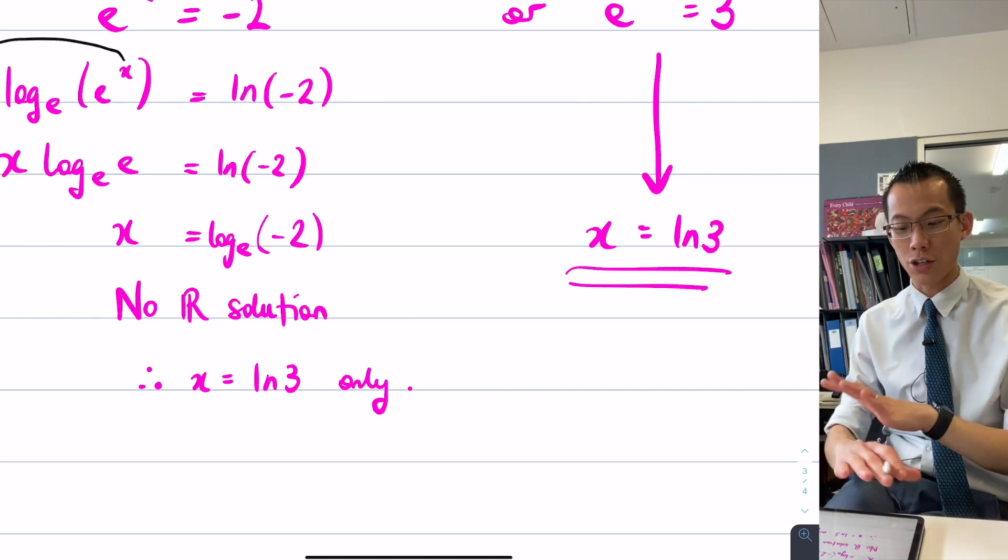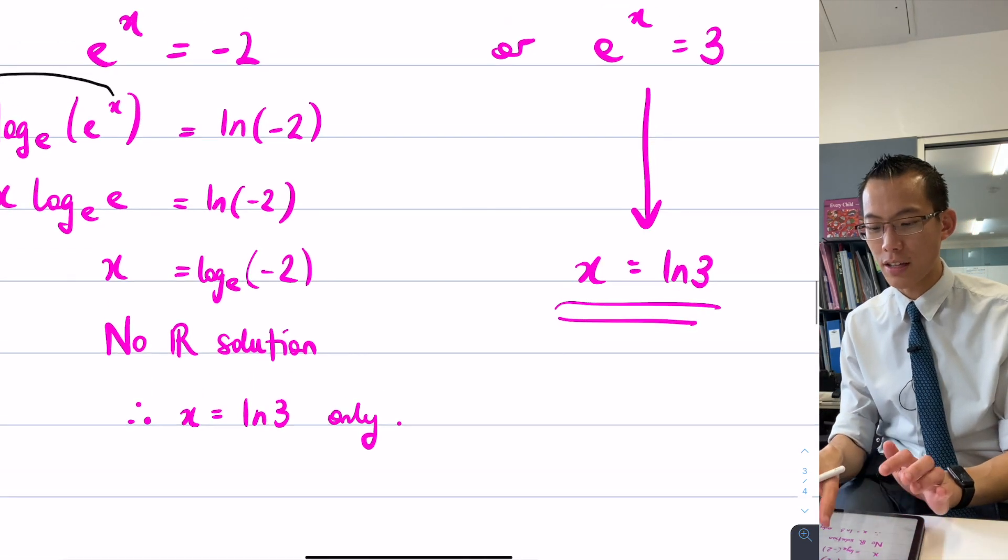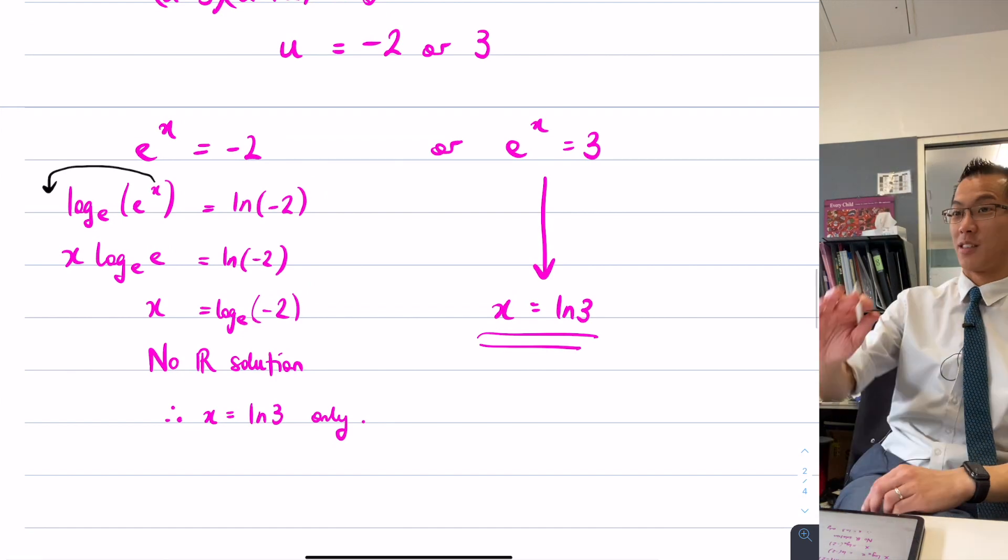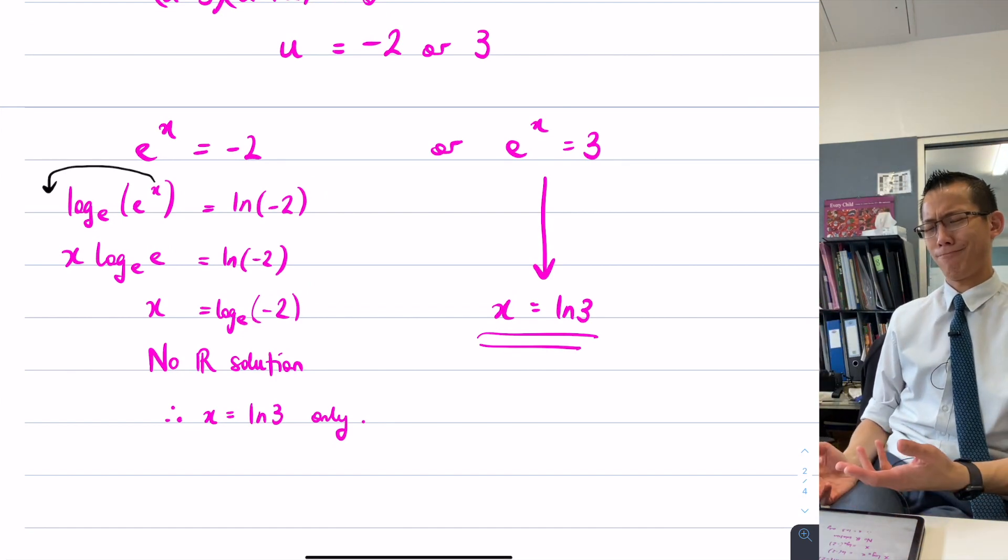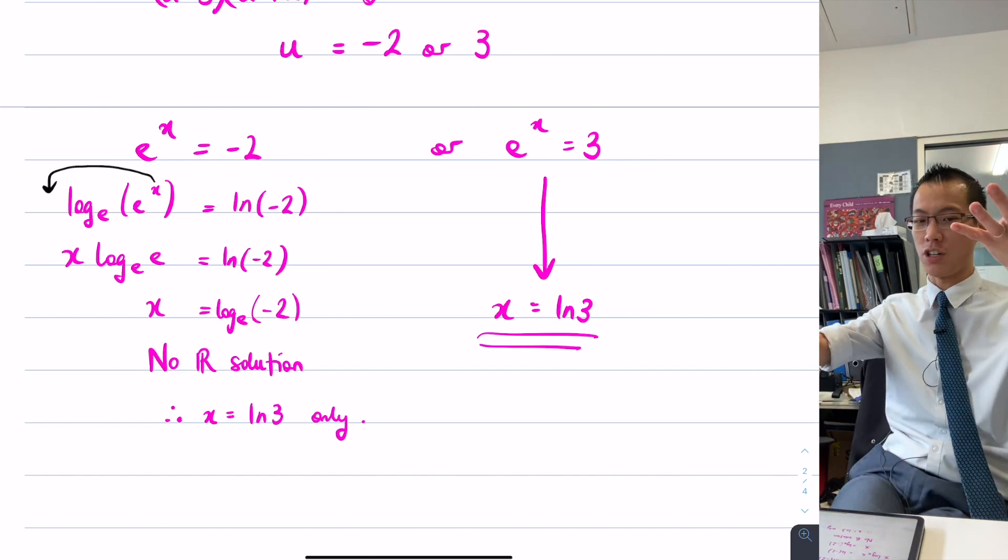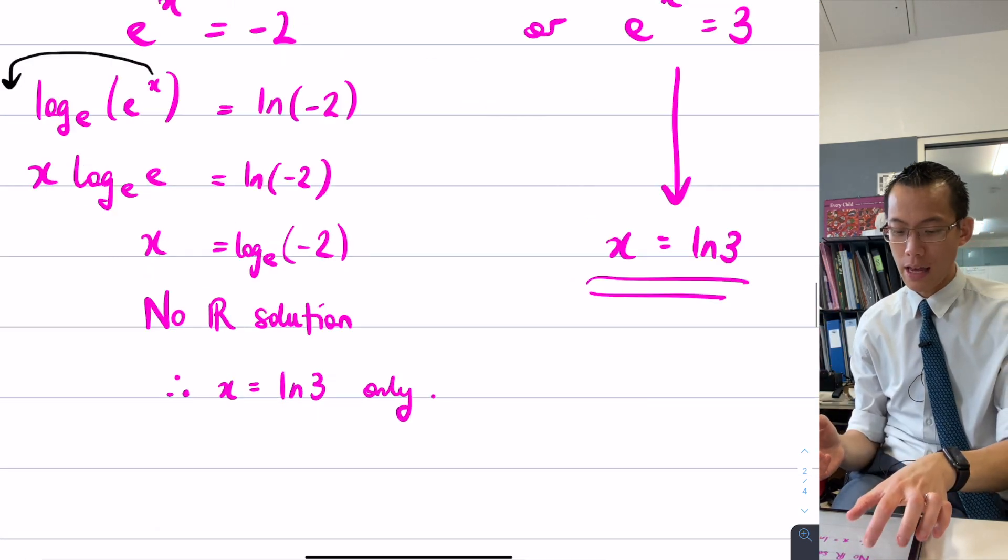Since you didn't get a solution here, but you've got a solution here, so what you would say is, in conclusion, x equals log three only. Can you see how confusing it is? If I don't say that, I've got two lines of working parallel to each other. One says there's no solutions, and the other says there is a solution. You're like, well, which one is it? So the whole point is you've got to combine those two together and draw out that.